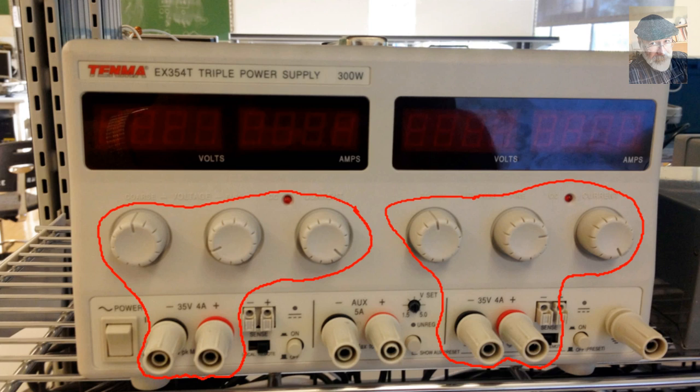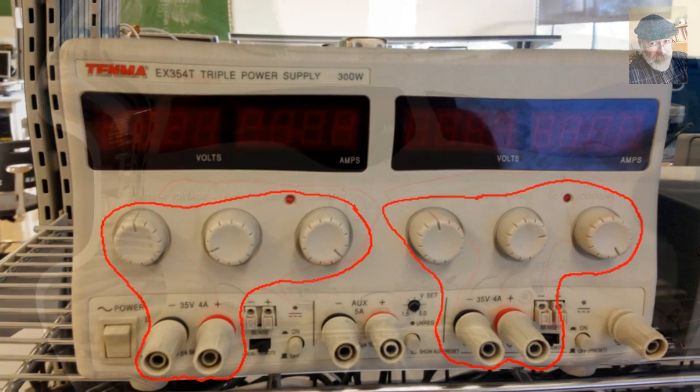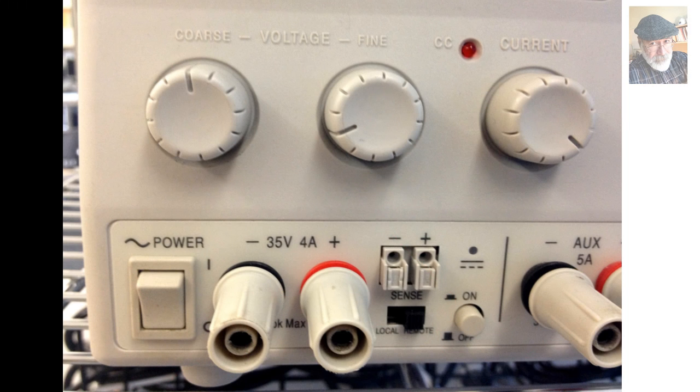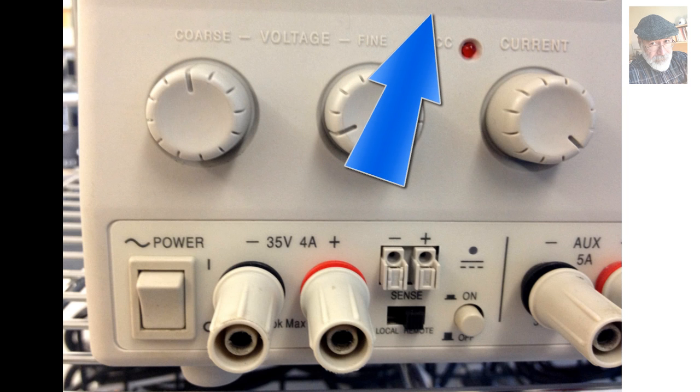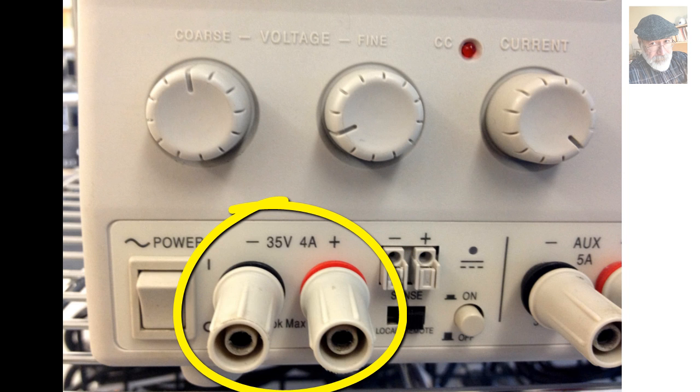For that, let's target the source on the left. Associated with that left source, there is one display that reads volts and amps, a power button, two terminals, a red and a black one.